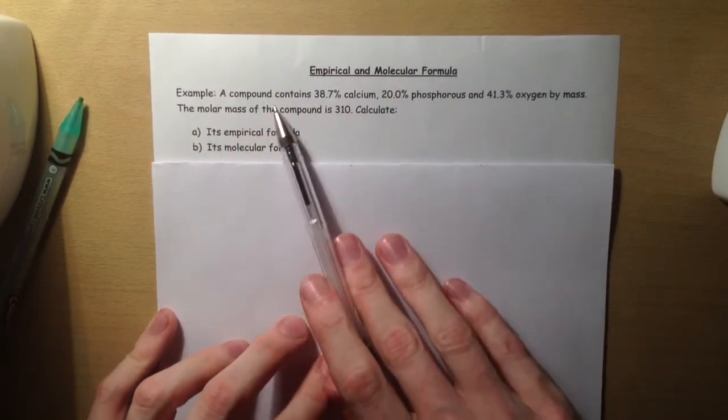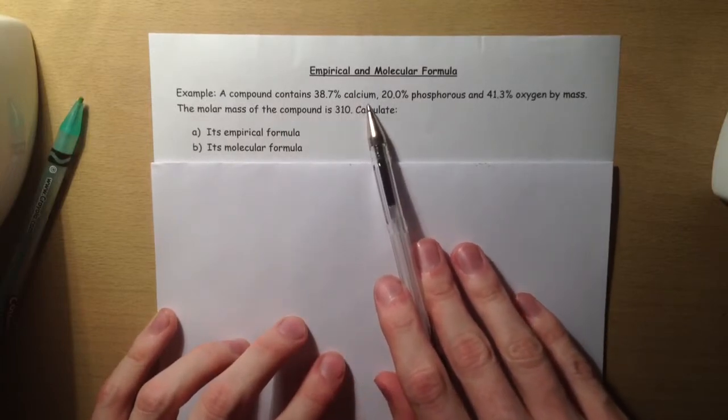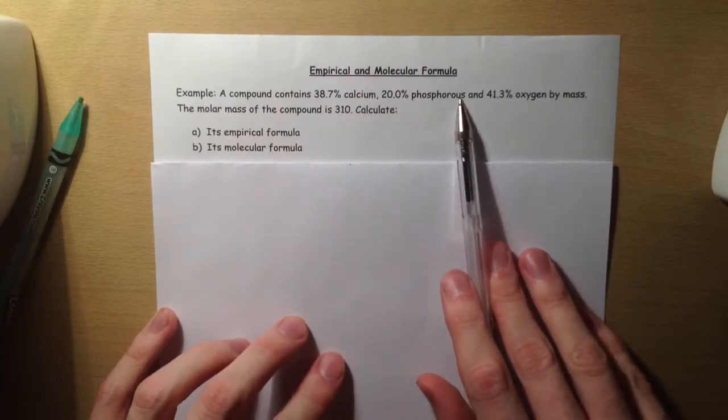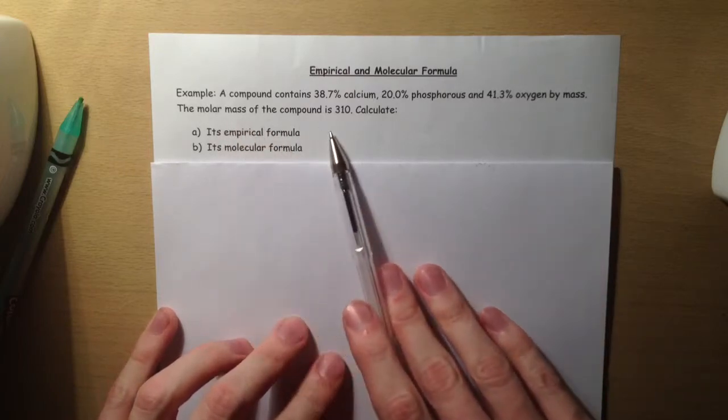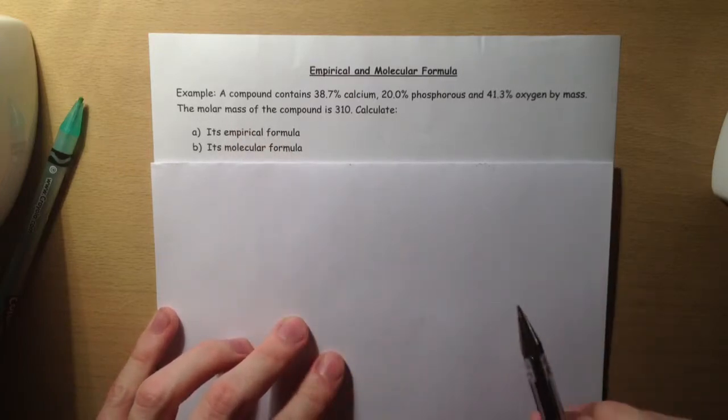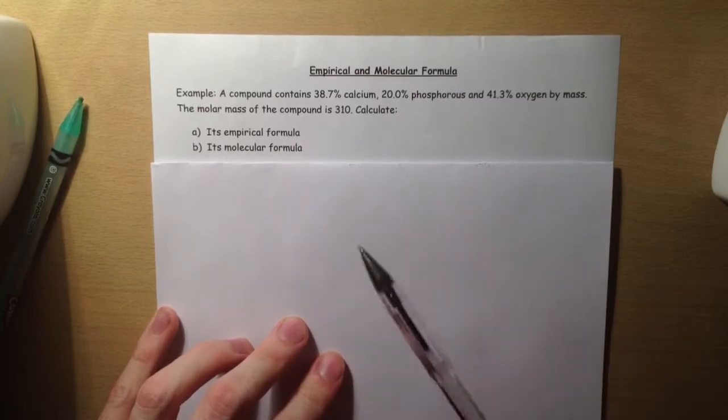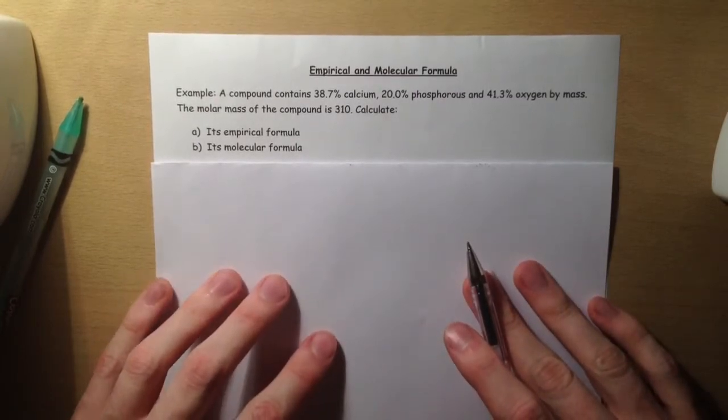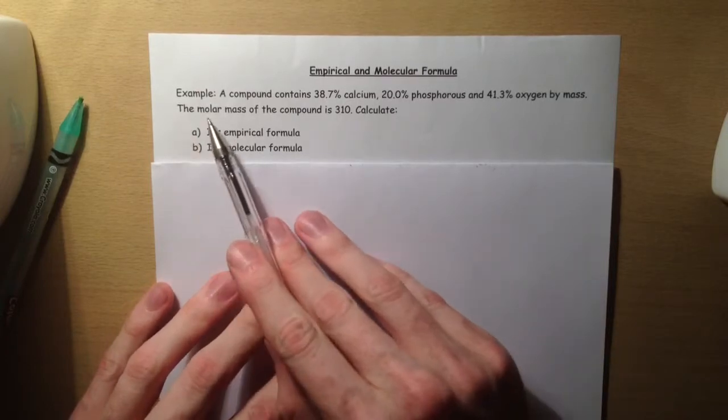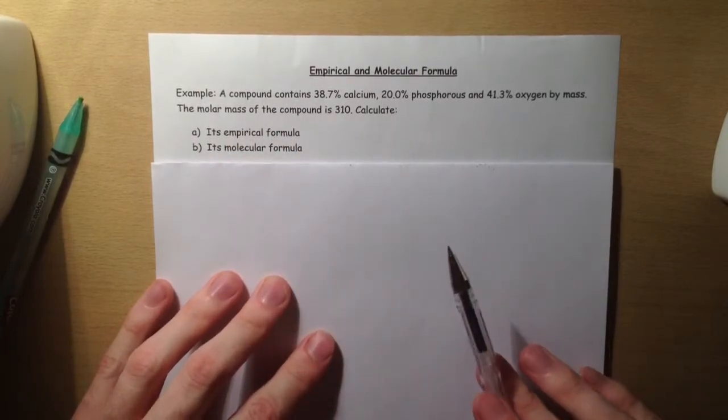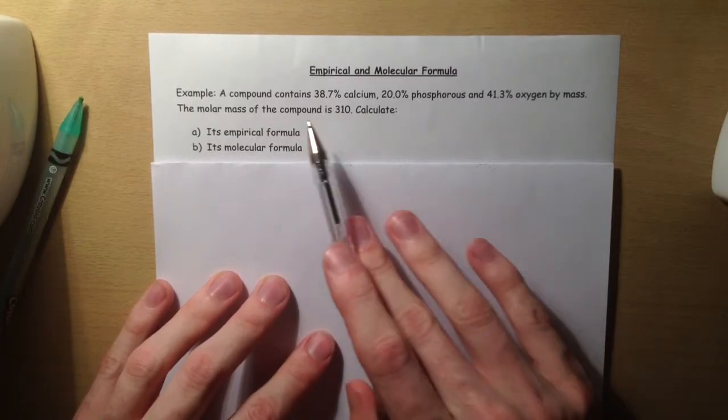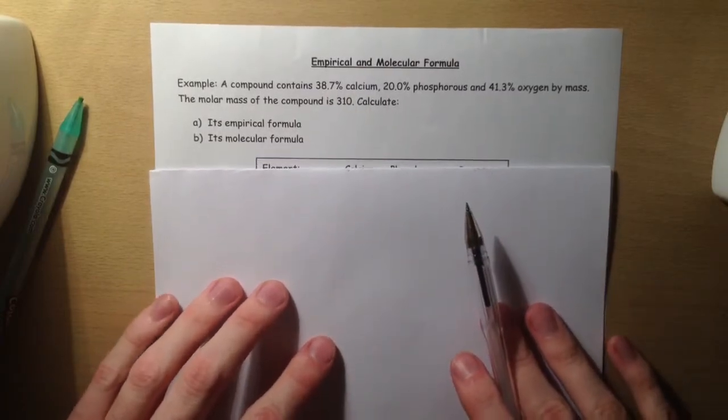Here's our example question. A compound contains 38.7% calcium, 20% phosphorus, and 41.3% oxygen by mass. The molar mass of the compound is 310 grams. Calculate its empirical formula and its molecular formula. The molar mass is important, but we're not going to use that until we work out the molecular formula.